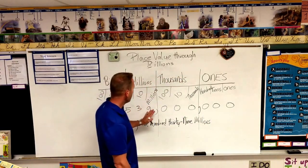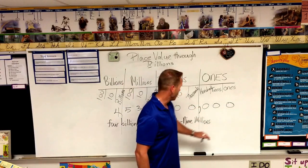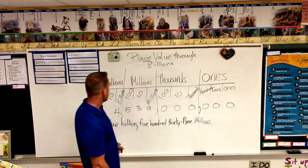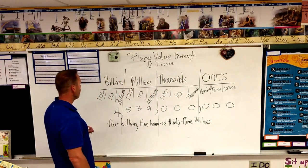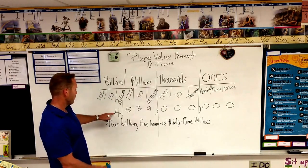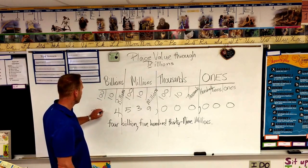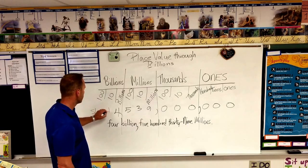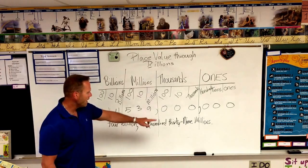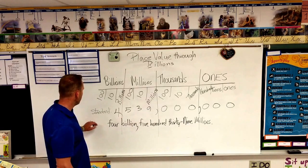We have all zeros after that, so we don't have to write anything else in word form. So we have this way of writing the number — this is called the standard form. And then when you write it out with words, this is the word form.